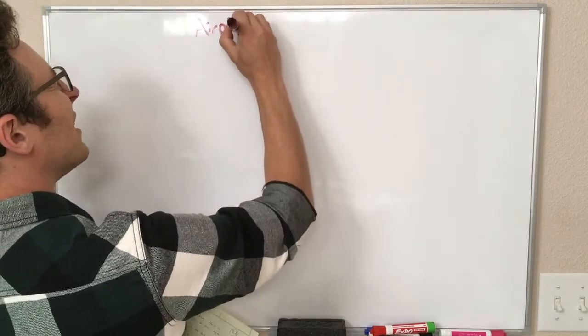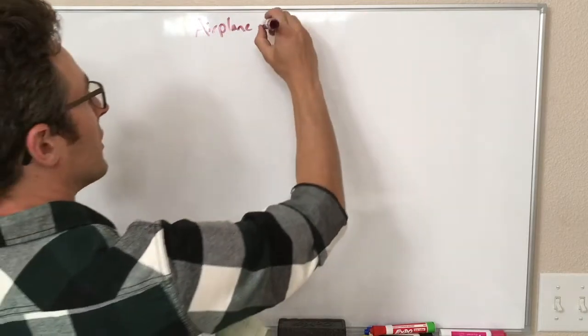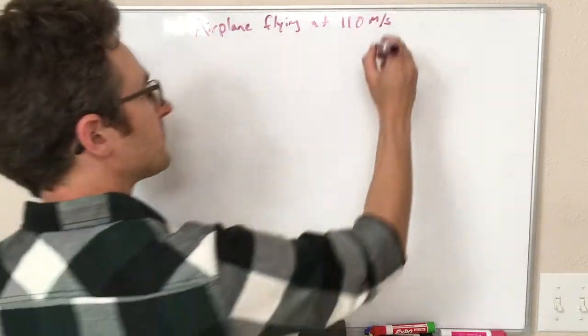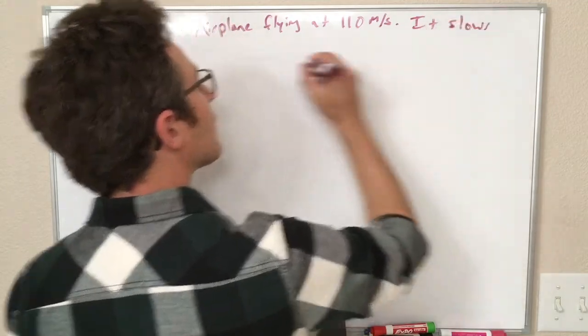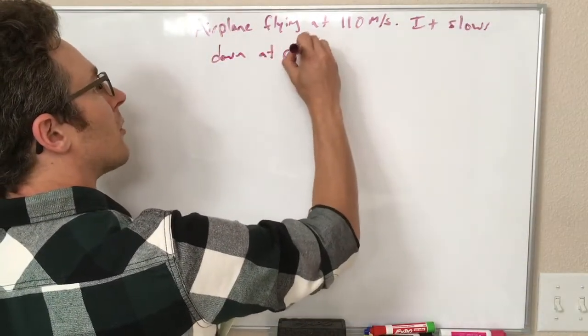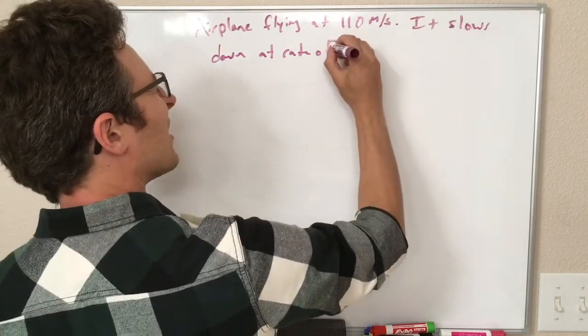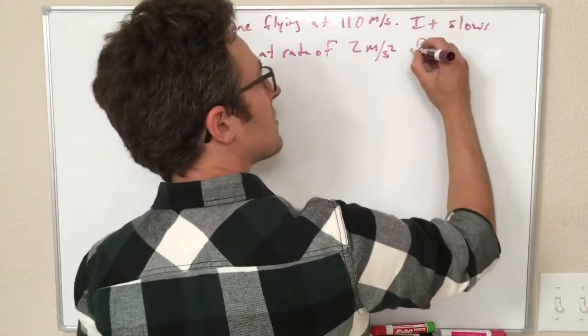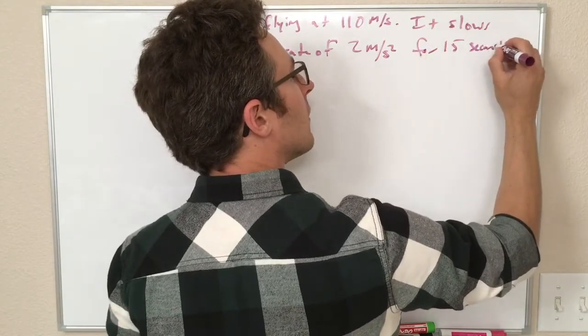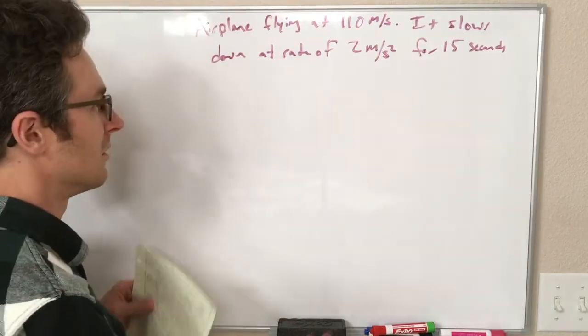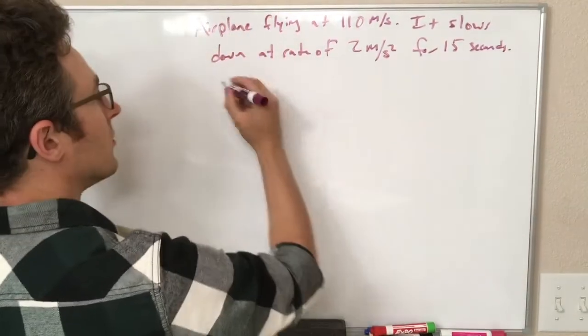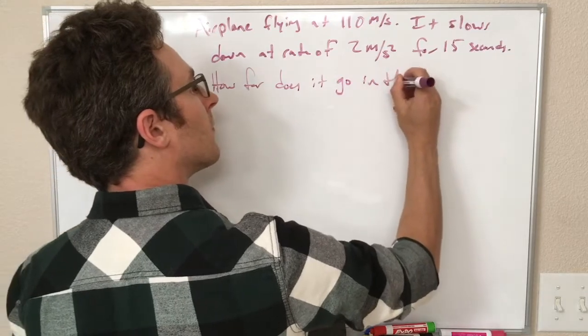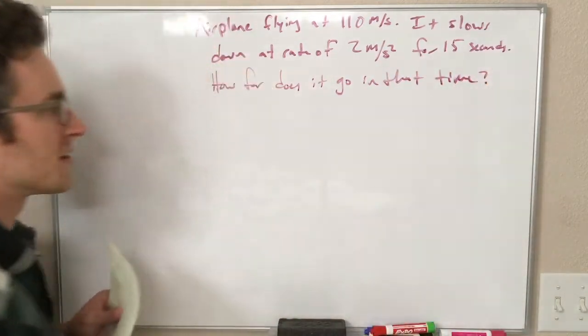So the problem is this. We have an airplane flying at 110 meters per second. It slows down at a rate of 2 meters per second squared for 15 seconds. So maybe they turn the engines down or something like that. So the question is, how far does it go during that time?